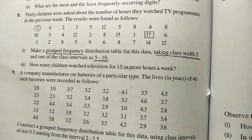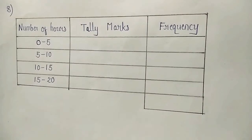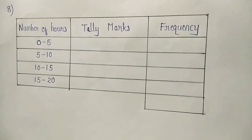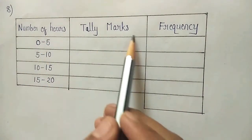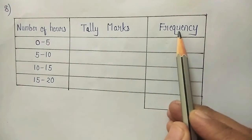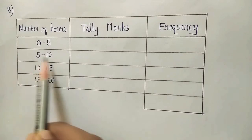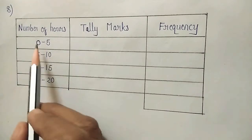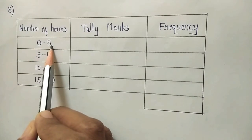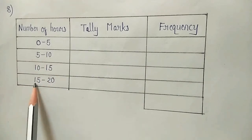Let us begin to make the frequency distribution table — remember it is a grouped frequency distribution table. In the first column we will write number of hours, the second column will have telemarks, and the third column will have frequency. The classes are: 0 to 5, then 5 to 10, 10 to 15, and 15 to 20.